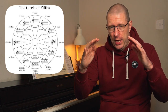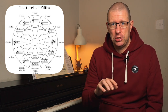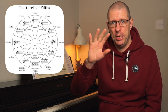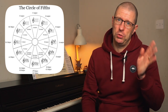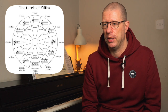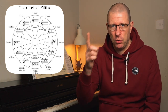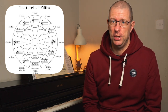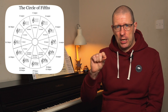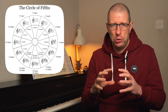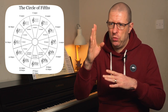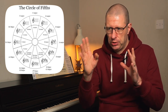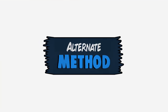The next circle in shows you the key signatures. C major has nothing in the key signature; G major has F sharp; F major has B flat — and it works its way around all 12 keys. The last part, coming in further, shows you the relative minor, so you can see from the chart that the relative minor to the major shares the same key signature.